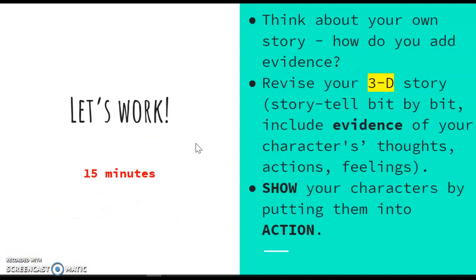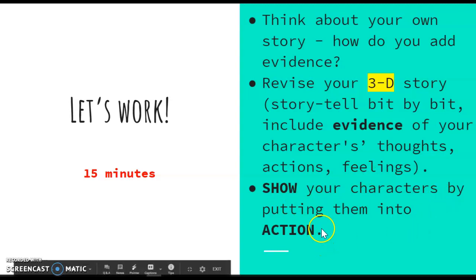And now we have some work time. I want you to think about your own story. How do you add evidence to your story? How can you revise your 3D story? Storytelling bit by bit, including evidence of your character's thoughts, their actions, their feelings, descriptions of the setting and the actions and what are going on using our sensory details and our imagery. How can we show our characters by putting them into action and going into detail about what that action is?